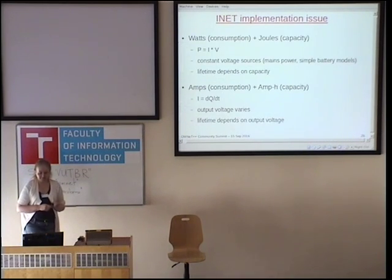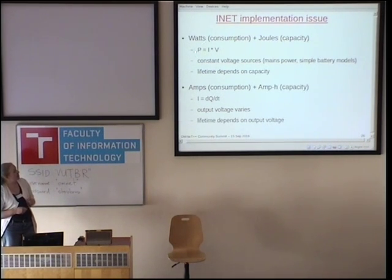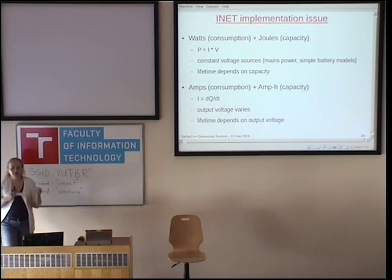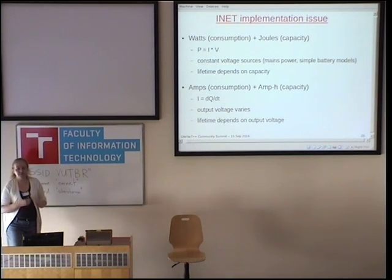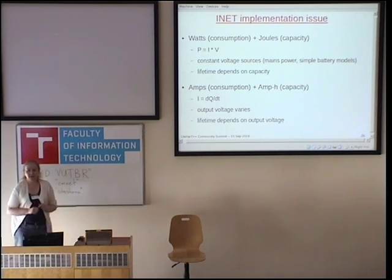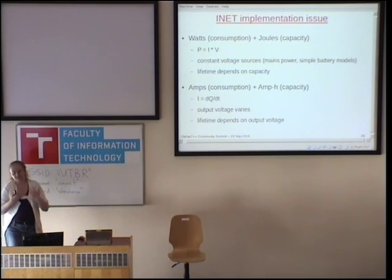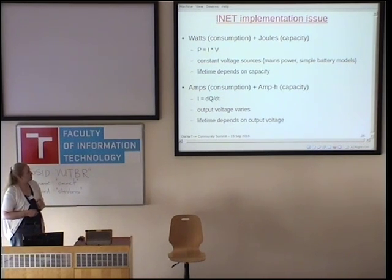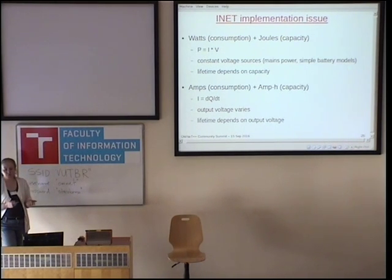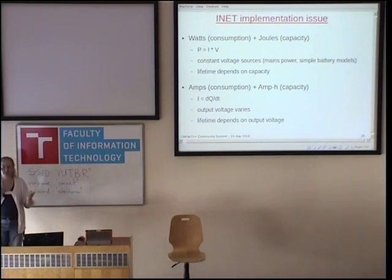I've been talking about current. Power — which is watts — is current times voltage. This is the right way to model constant voltage sources, like mains power or simulating a data center where all the devices are described in terms of watts. Simple battery models that don't have an internal voltage model work the same way. For more complex models, we have current drawing charge as a function of time, the output voltage varies, and the lifetime depends on the output voltage. So we would like a way — and hopefully talking with Levente — to support both kinds of interfaces in INET.